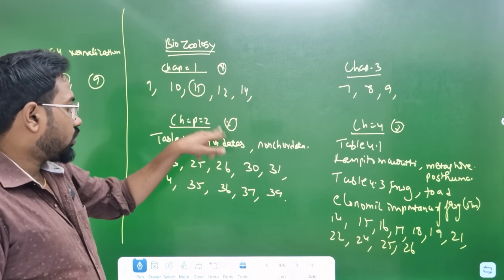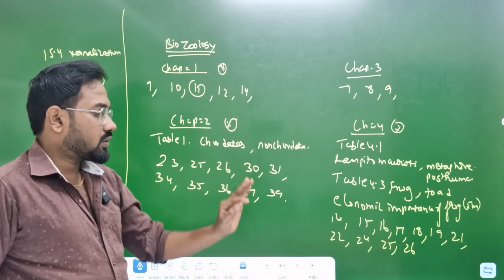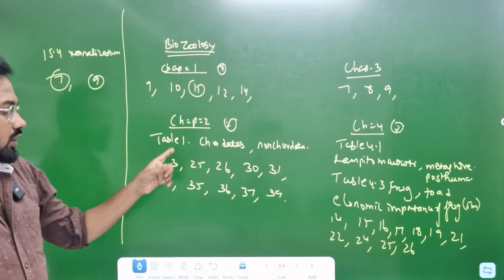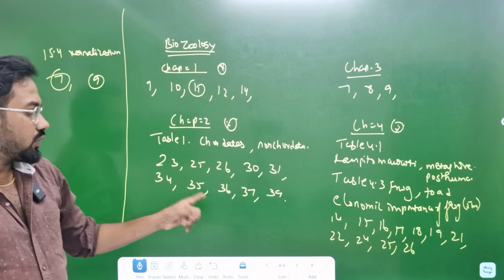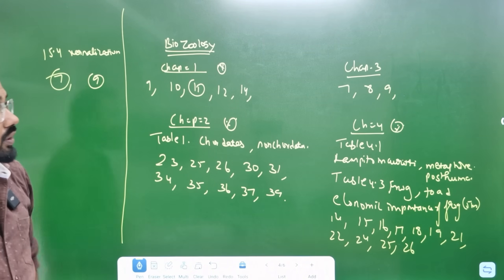Chapter 2 — chordate and non-chordate. Very important — 5 marks. Sections 23, 25, 26, 30, 31, 34, 35, 36, 37, 2, 3.